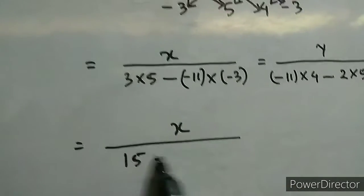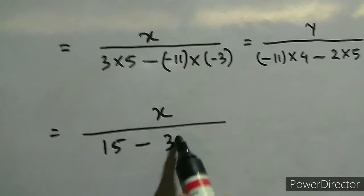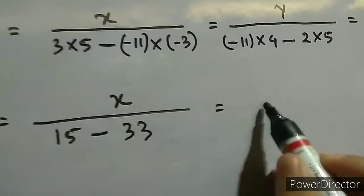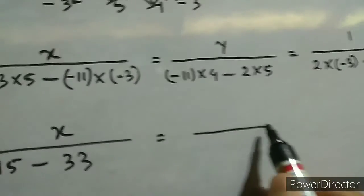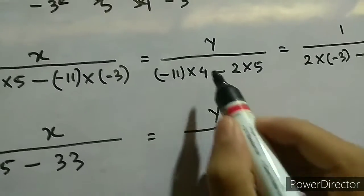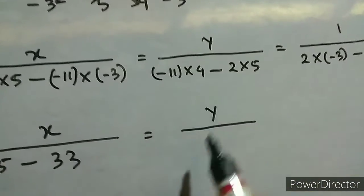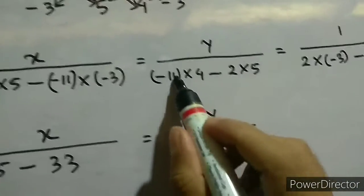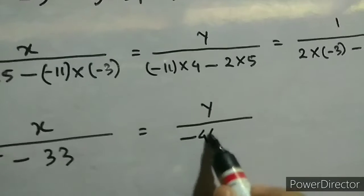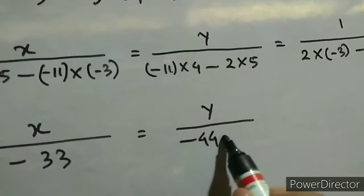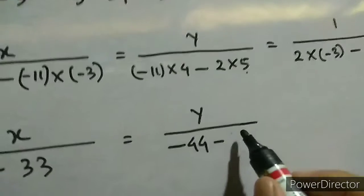Multiplying: 5 into 3 equals 15, minus into minus gives plus. Minus 11 into 3 equals minus 33, minus into minus gives plus. Minus 11 into 4 equals 44, and 5 into 2 equals 10.